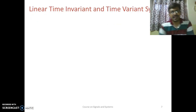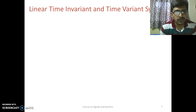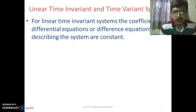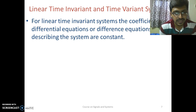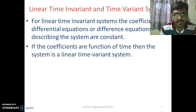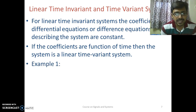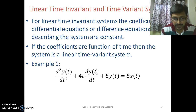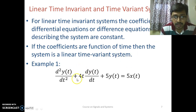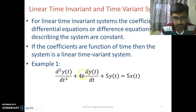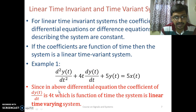Now we consider another example to find out whether a system is a linear time invariant system or not. For linear time invariant systems, the coefficients of differential equations in continuous time systems and difference equations in discrete time systems must be constant. If the coefficients are functions of time, then the system is a linear time variant system. In this example, the term 4t·(dy/dt) is a function of time t, so this system is a linear time variant system — it is not a constant value.